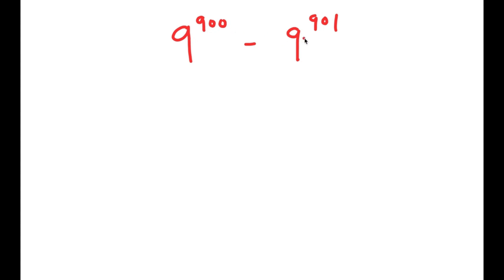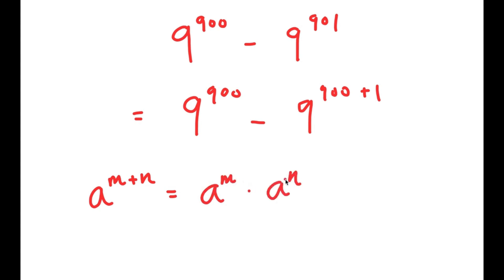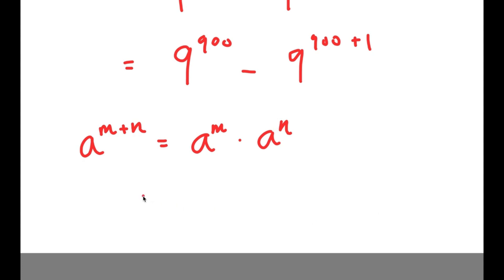9 to the power of 900 is actually a factor of 9 to the power of 901, so all we have to do is rewrite 9^901 as something times 9^900. We can use properties of exponents to do this — I'm going to rewrite 9^901 as 9^(900+1), and now I can use the exponential property: a to the power of m plus n is equal to a^m times a^n.